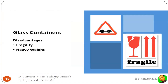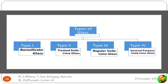The disadvantages of glass are that it is highly fragile and heavy. There are four types of glass materials: Type 1 (borosilicate glass), Type 2 (treated soda lime glass), Type 3 (regular soda lime glass), and Type 4 (general purpose soda lime glass). Type 1 borosilicate glass is used for parenteral preparations because it is the purest grade and does not allow leaching of substances from the material into the product.